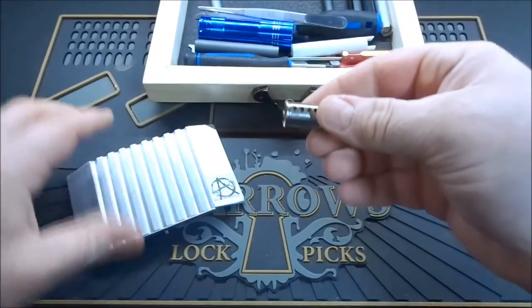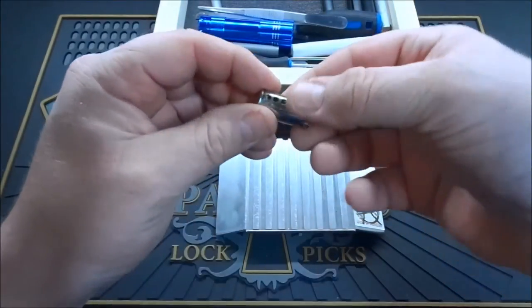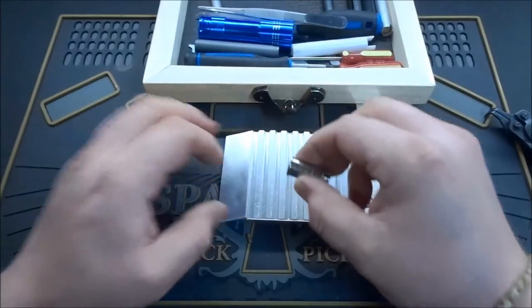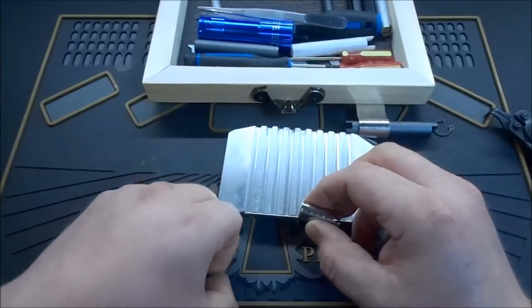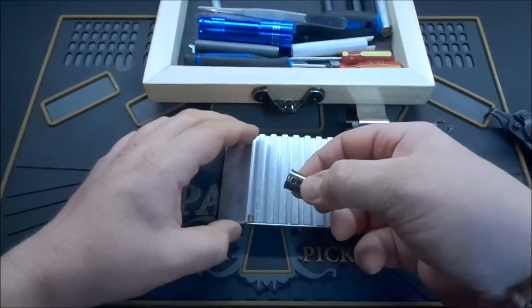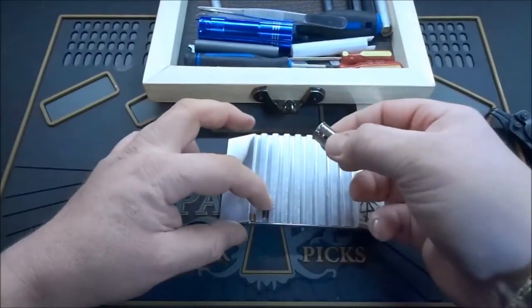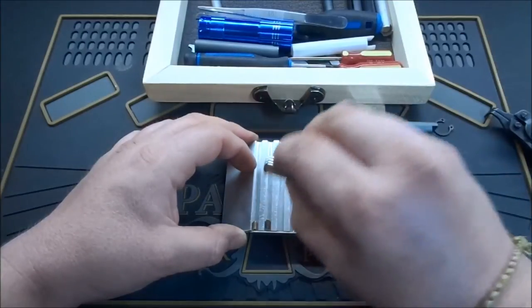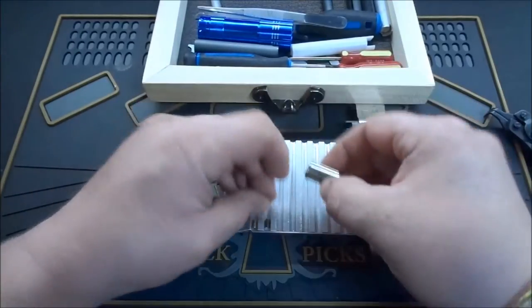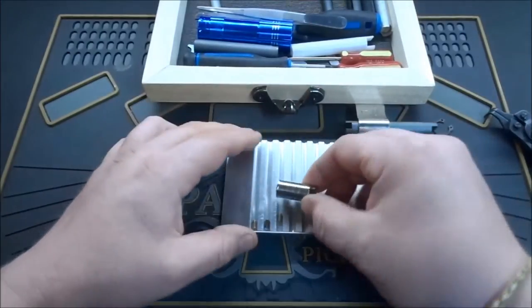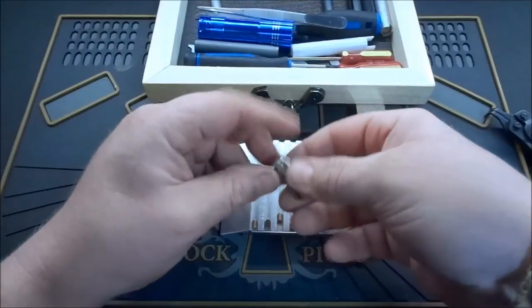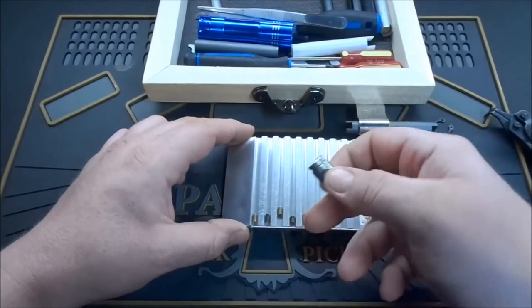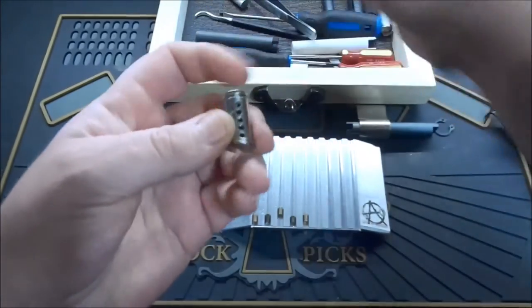Okay, well, that went much better than the one I took apart yesterday, if you guys watch that one. So in the plug we have key pin number one, looks like we got a serrated. Number two, serrated. Number three seems to be stuck. There we go. Three is a serrated. Four is serrated. And five is serrated. So we're all serrated in this one.